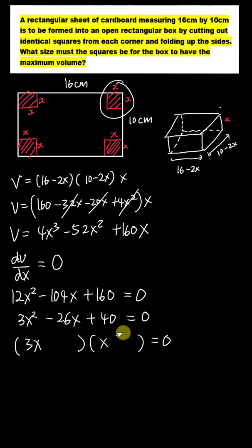And then in order to get 26, here should be 20 and 2. And then minus for both. So here will tell me my x equals 20 over 3, and this one is x equals 2.